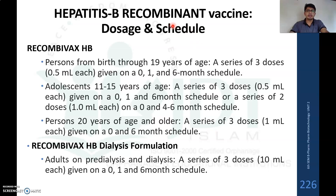Commercially available hepatitis B recombinant vaccines have specific dosage and schedules. For persons from birth through 19 years of age, a series of 3 doses each of 0.5 ml is given at 0, 1, and 6 month schedule. For adolescents 11 to 15 years of age, either a series of 3 doses of 0.5 ml at 0, 1, and 6 months, or a series of 2 doses of 1 ml given 4 to 6 months apart.